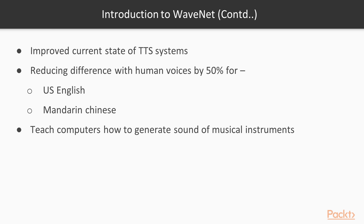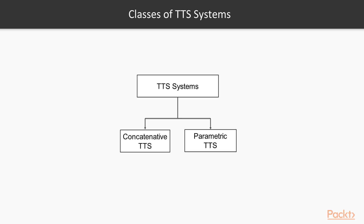What's even cooler is that DeepMind proved that WaveNet can also be used to teach computers how to generate the sound of musical instruments such as piano music. Now it's time for some definitions. TTS systems are typically divided into two different classes.